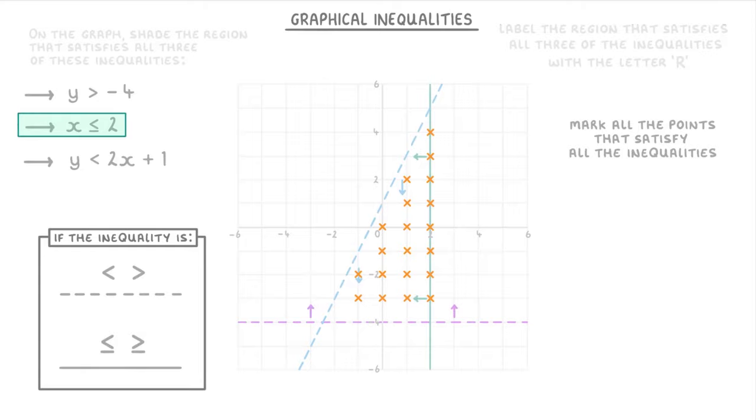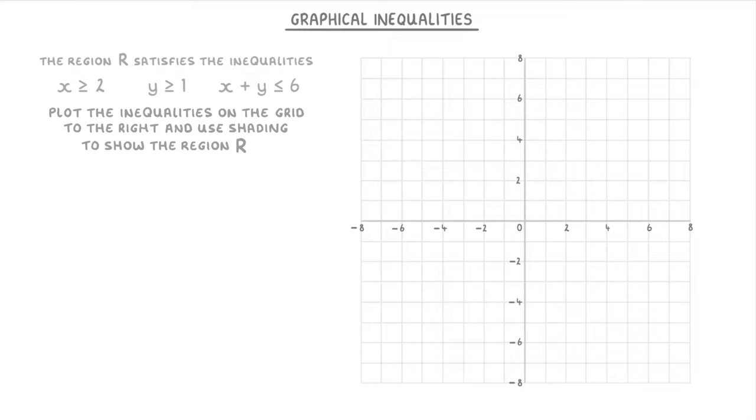Let's quickly have a go at one more before we finish. This question says that the region R satisfies the inequalities x is more than or equal to 2, y is more than or equal to 1, and x plus y is less than or equal to 6. And it then asks us to plot the inequalities on the grid to the right and use shading to show the region R.